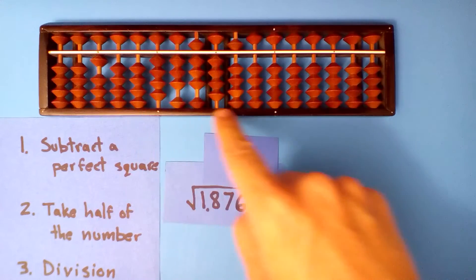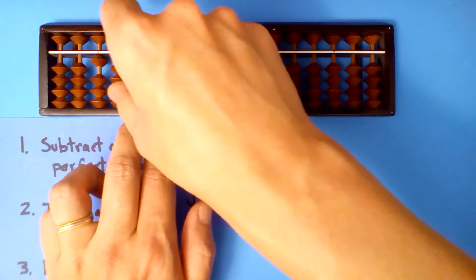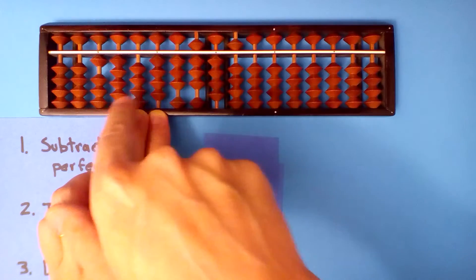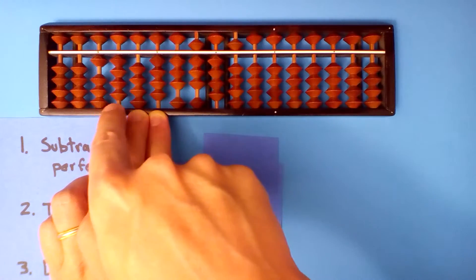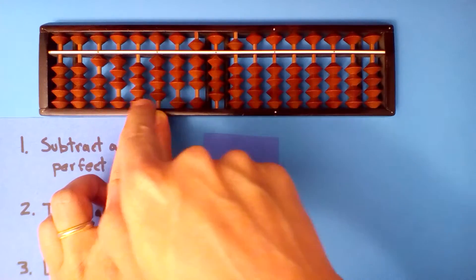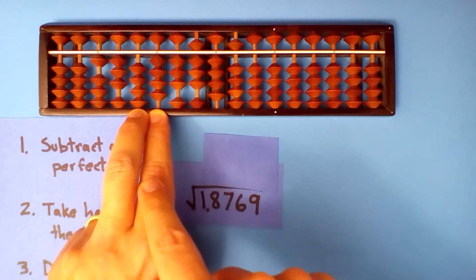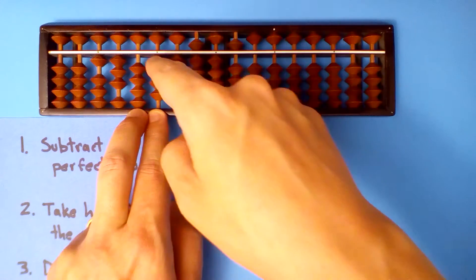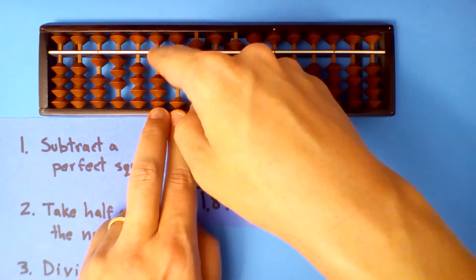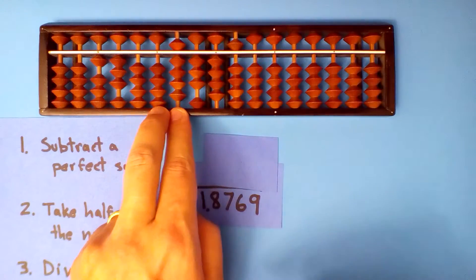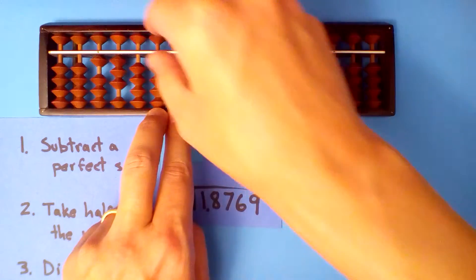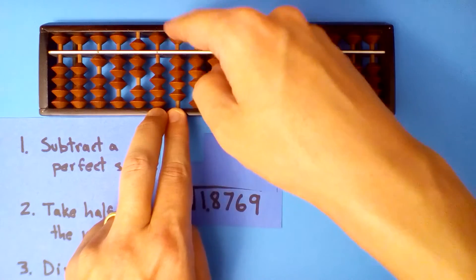Now we divide this number into this one. One goes into four four times, but it's 1.4 now. 1.4 does not go into four four times, so four is actually too much. Let's try three instead. Does 1.3 go into four three times? Yes it does, so we're okay. Let's multiply and subtract. Three times one is three. Three times itself is nine, but we just take half of that — four and a half. Subtract four and a half.